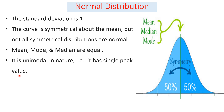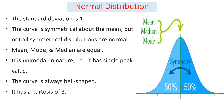Sometimes there are multiple or several modes. The curve is always bell-shaped. And it has a kurtosis value of 3 — for normally distributed data, the kurtosis value must be 3. And it has 0 skewness, meaning the skewness value is 0 for normally distributed data.